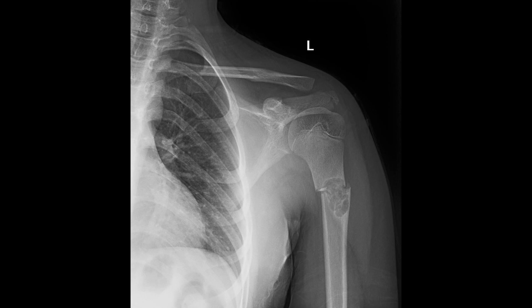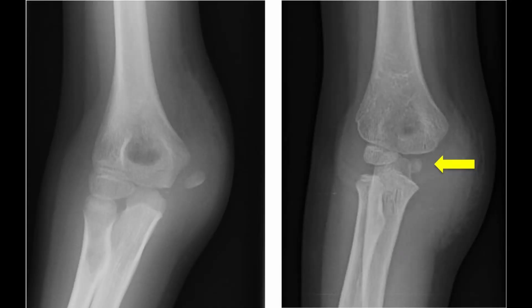The median nerve is most commonly involved in the supracondylar fracture of the humerus. For ossification, the humerus has one primary center for the shaft, three secondary centers for the upper end, and four secondary centers for the lower end. It is important to note that the separate center for the medial epicondyle and its late union with the shaft may be mistaken for a fracture of the medial epicondyle of the humerus.